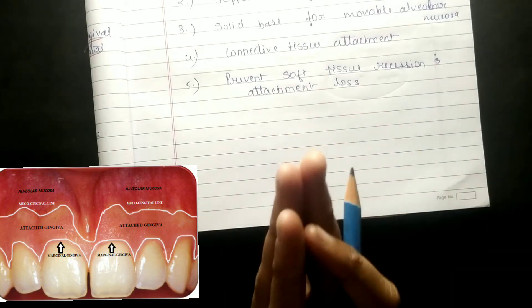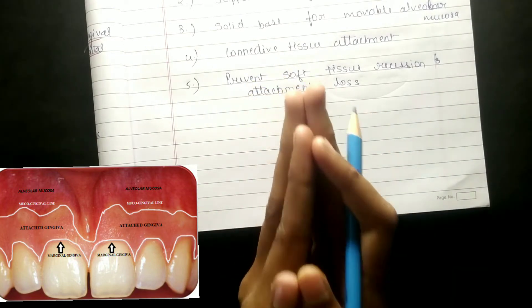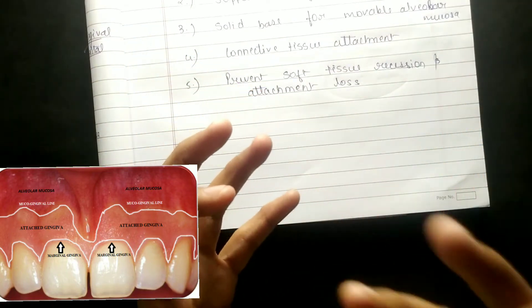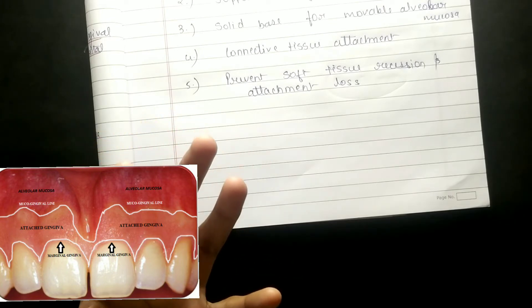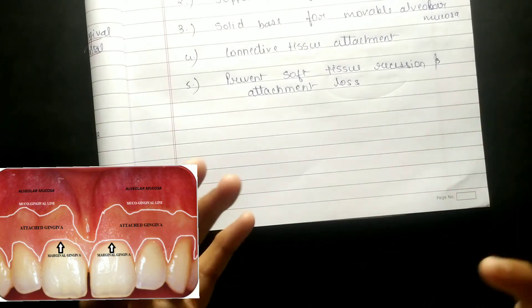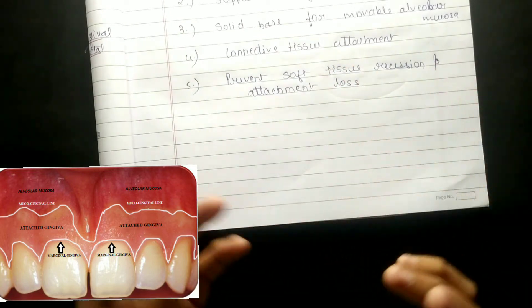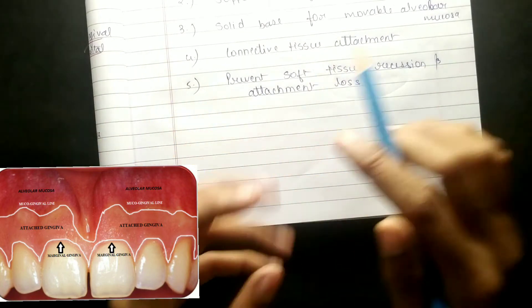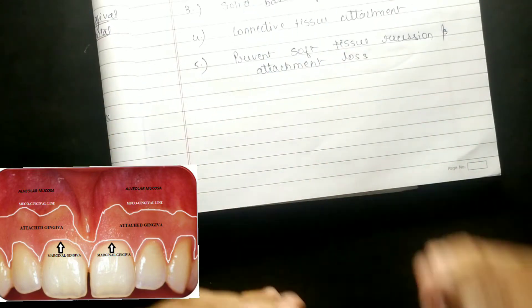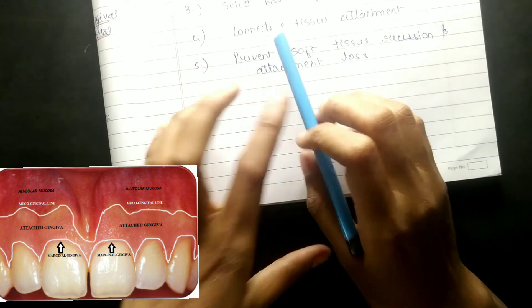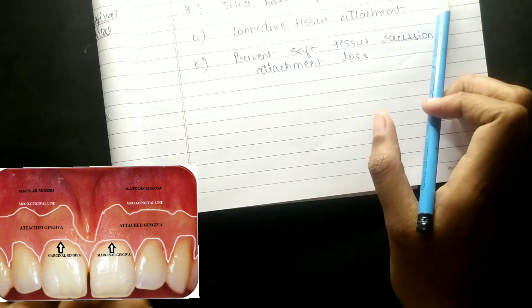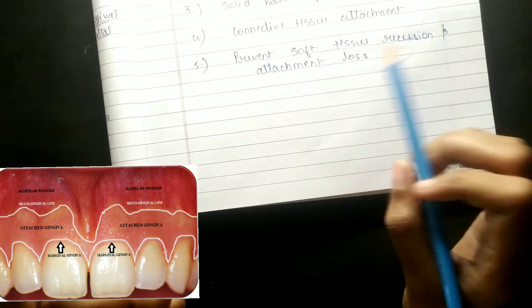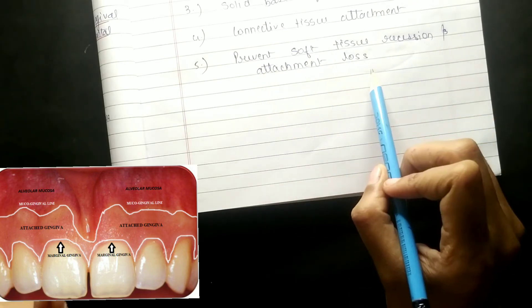Now, functions of attached gingiva. First, it provides protection — when you eat food or something hard, it protects against frictional forces during mastication. Second, it supports marginal gingiva and free gingiva. Third, it provides a solid base for the movable alveolar mucosa. Fourth, through connective tissue attachment, it prevents soft tissue recession and attachment loss.